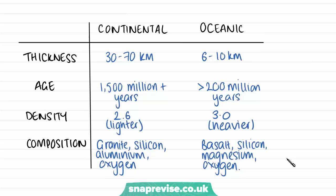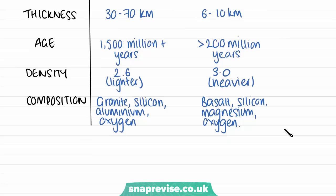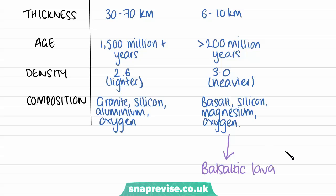They also have different compositions. Continental crust is made up of granite, silicon, aluminium, and oxygen. Oceanic crust is made of basalt, silicon, magnesium, and oxygen. One point we can take from this is that oceanic crust contains basalt, which is why some of the magmas produced from oceanic crust are called basaltic — such as basaltic lavas when volcanoes erupt.